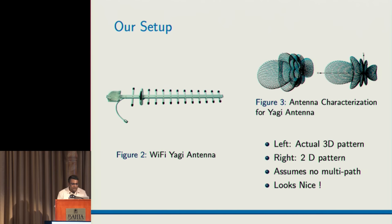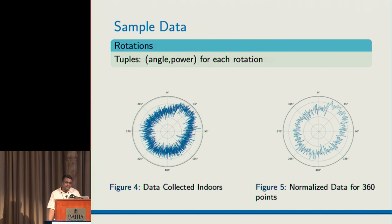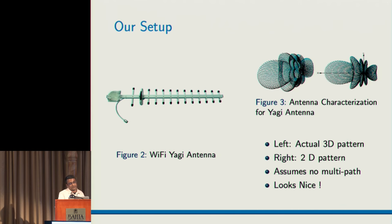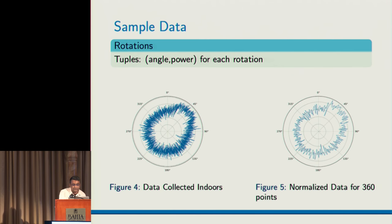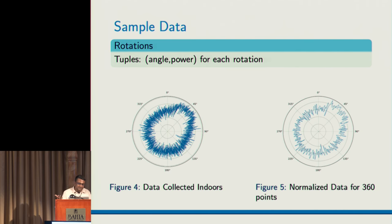The antenna we used is supposed to have a very nice radiation pattern, but we never characterized it — we never went into an anechoic chamber to find out what the pattern looked like. So we had no clue about the pattern when we started using it. We were expecting to see very nice data, but unfortunately when we collected data indoors, we found it was quite noisy. Though there is some directionality to it, it's not giving anything like what we expected — we expected much cleaner data.